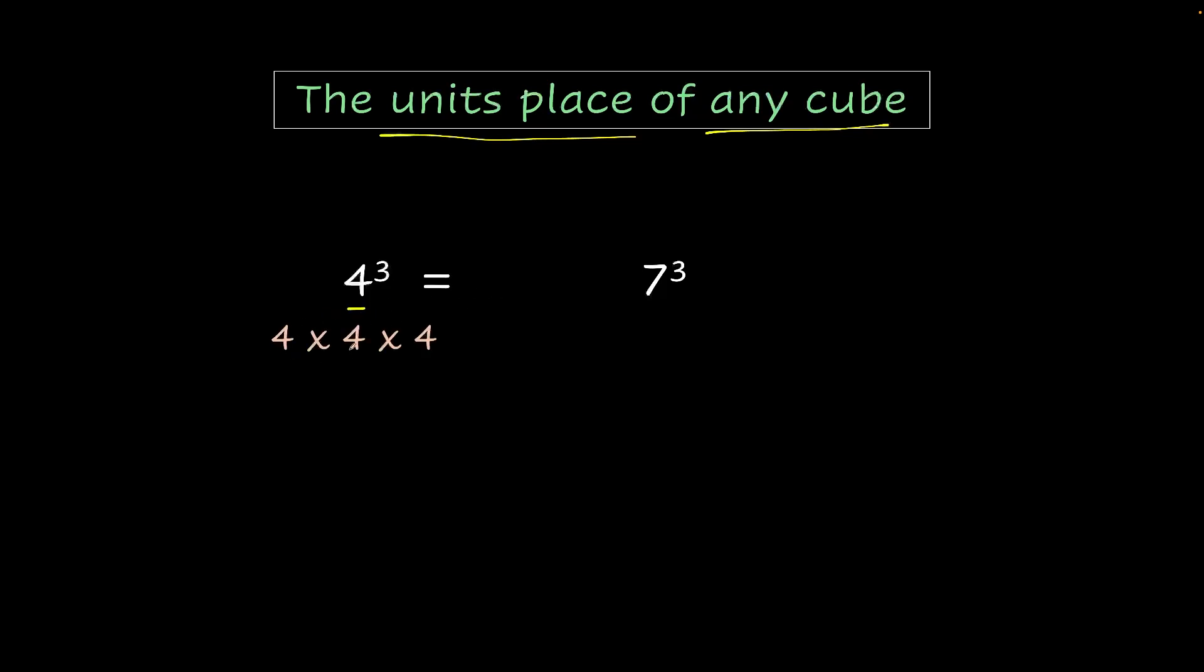Let's take a number like 4 cube. You try to multiply 4 into 4 into 4 which is 4 cube. 4 times 4 is 16, 16 into 4 is 64. And then you would see the last digit which is 4. So the unit's place of 4 cube is 4. Similarly for 7 cube you would multiply 7 times 7 times 7 and that would be 343. So the unit's place is 3.